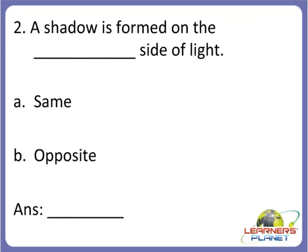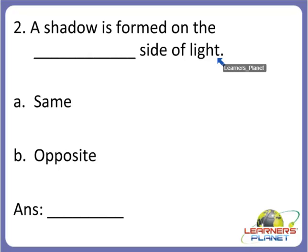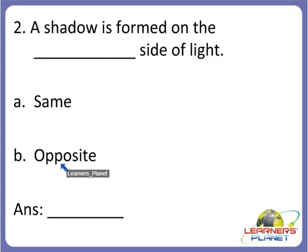Now the next one. A shadow is formed on the blank side of light. We solved this same question in fill in the blanks — try to recall. Is a shadow formed on the same side of light or the opposite side? A shadow is formed on the opposite side of light. So D is the correct answer.